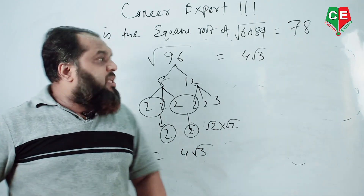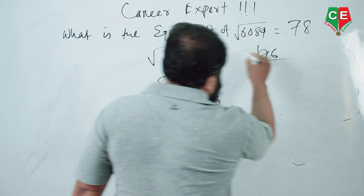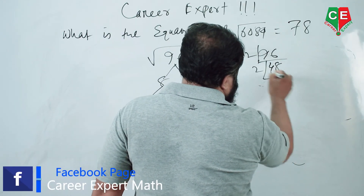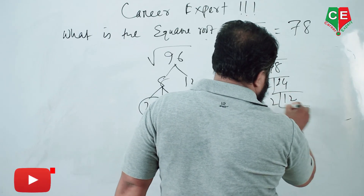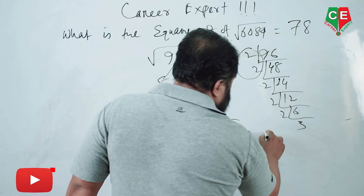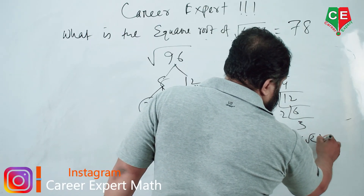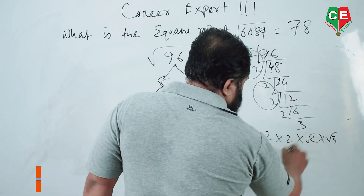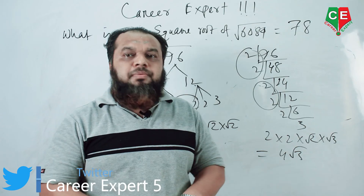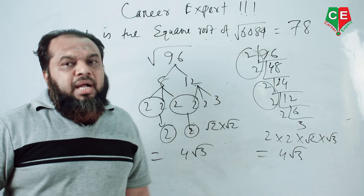We can also solve this another way: 96 → 48 → 24 → 12 → 6 → 3 by successive division by 2. So we get two 2s outside and root 2 × root 3, giving 4√3. This is how you solve square root simplification problems. For numbers with more than two pairs of digits, you can follow these tricks.